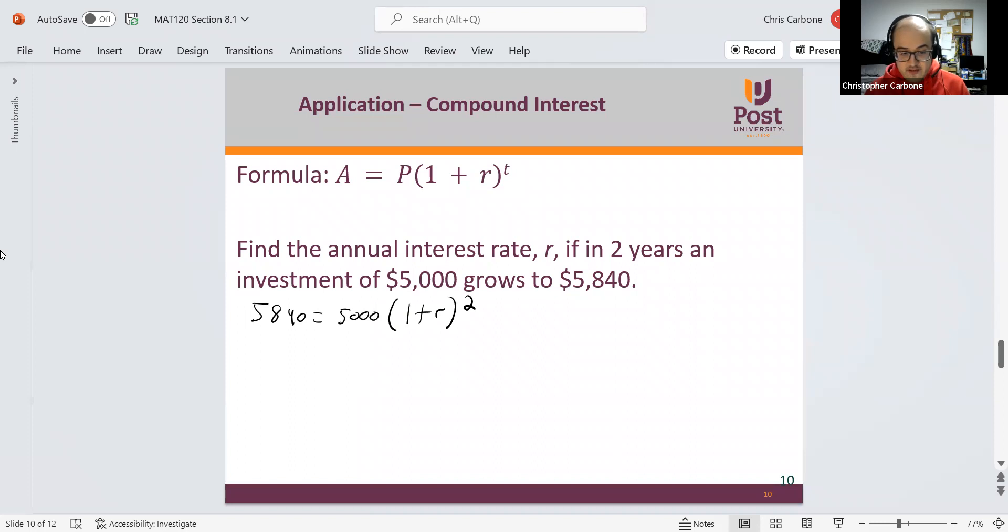So $5,840 equals $5,000 times 1 plus r squared. We could divide by $5,000 first. Which unfortunately does not go evenly. So whatever decimal you get from $5,840 divided by $5,000 is supposed to equal 1 plus r squared. And then we could square root both sides. So this is the square root of $5,840 divided by $5,000 equals 1 plus r.